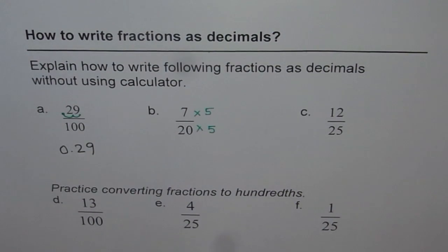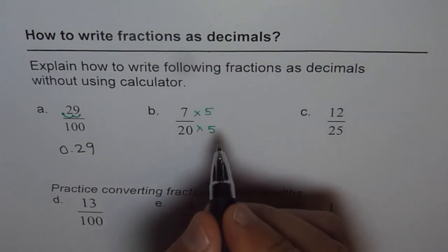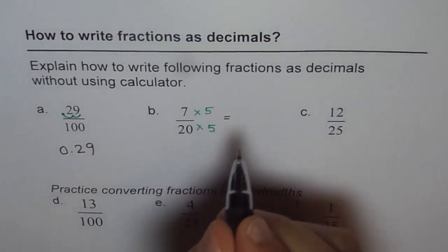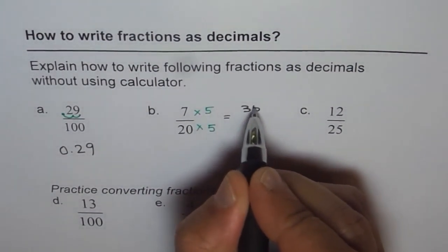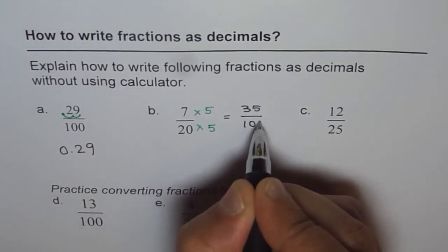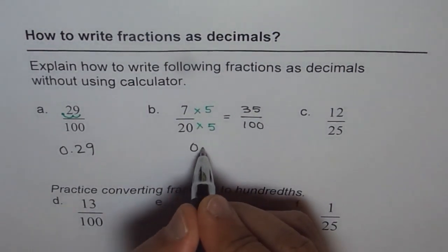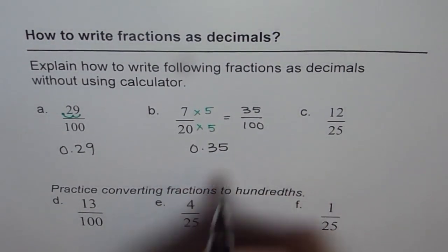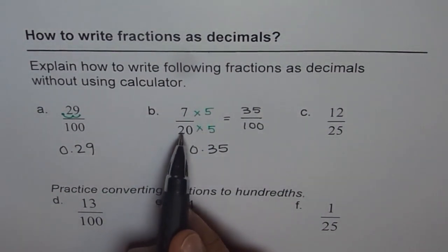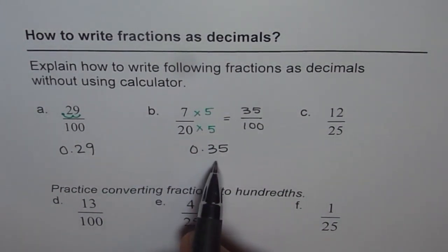When we do that, what do we get? We get 7 times 5 is 35 over 100. Now 35 hundredths can be written as 0.35. And that is how we can write 7 over 20, a fraction, as a decimal number.